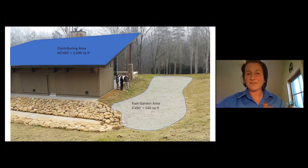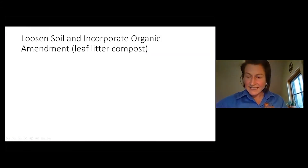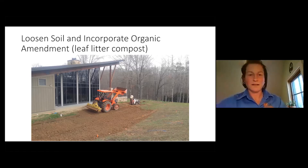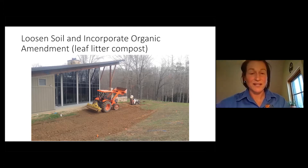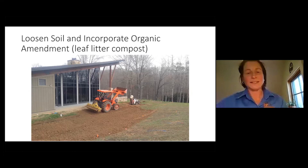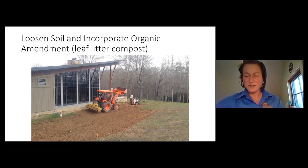The rain garden footprint was sized at about 10 to 15 percent of the contributing area — closer to 15 or even 20 percent for clay-heavy subsoils with lower infiltration capacity. We prepped the site using a tractor with a pull-behind tiller, running it over the site to loosen the compacted subsoil and incorporate organic leaf litter compost to at least six to eight inches depth. A local donor supported purchasing the native plants for the space.